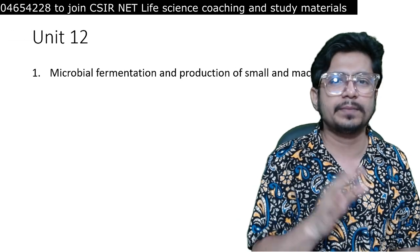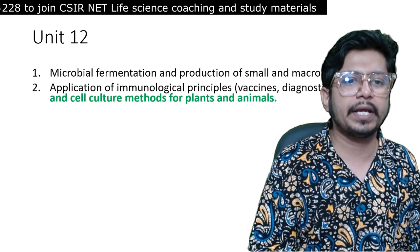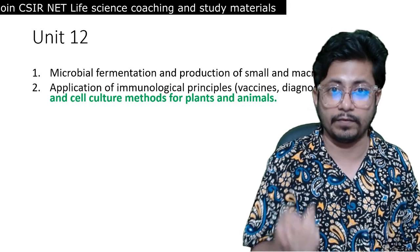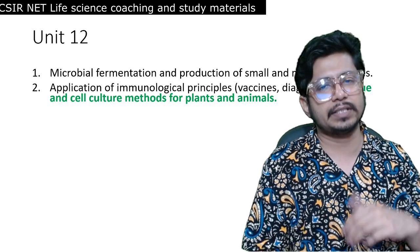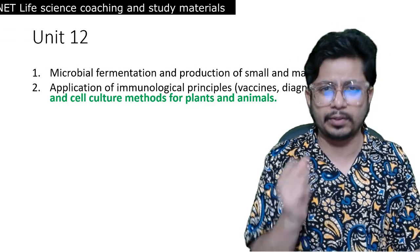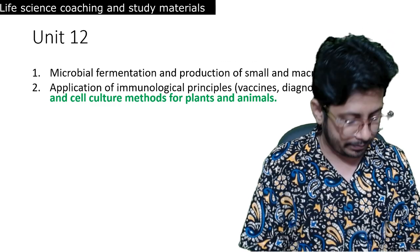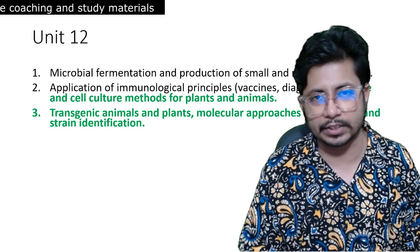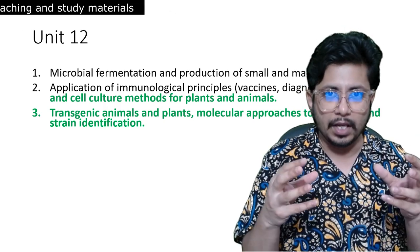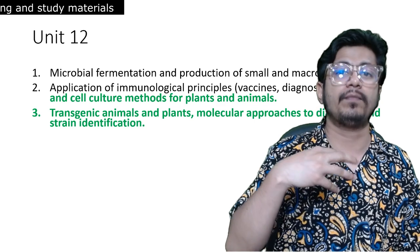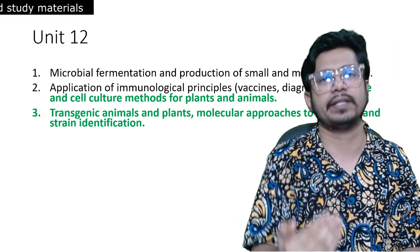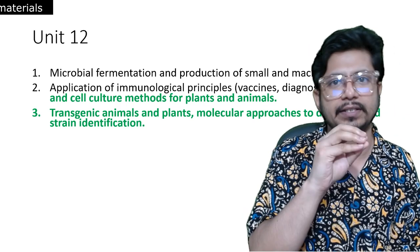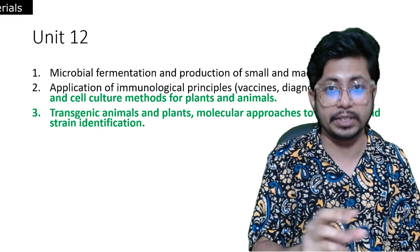Fermentation technology is listed but they don't ask questions from this topic anymore. Application of immunological principles and tissue and cell culture methods for plants — plant tissue culture is really important. Animal tissue culture is also there but questions asked will be limited. Next is transgenic animals and plants, and molecular approaches to diagnostics and identification. Plant biotechnology is a section in Unit 12 from which they ask a lot of questions.